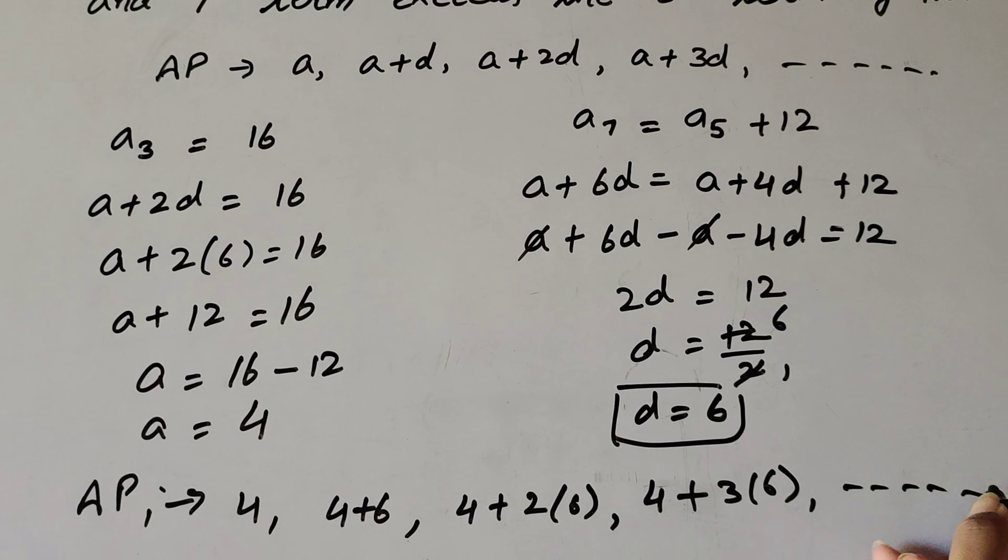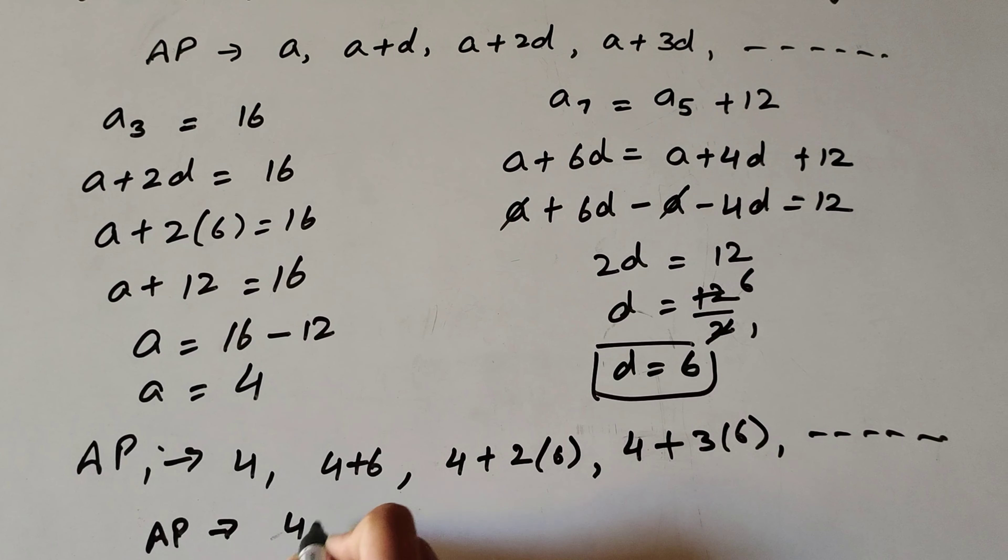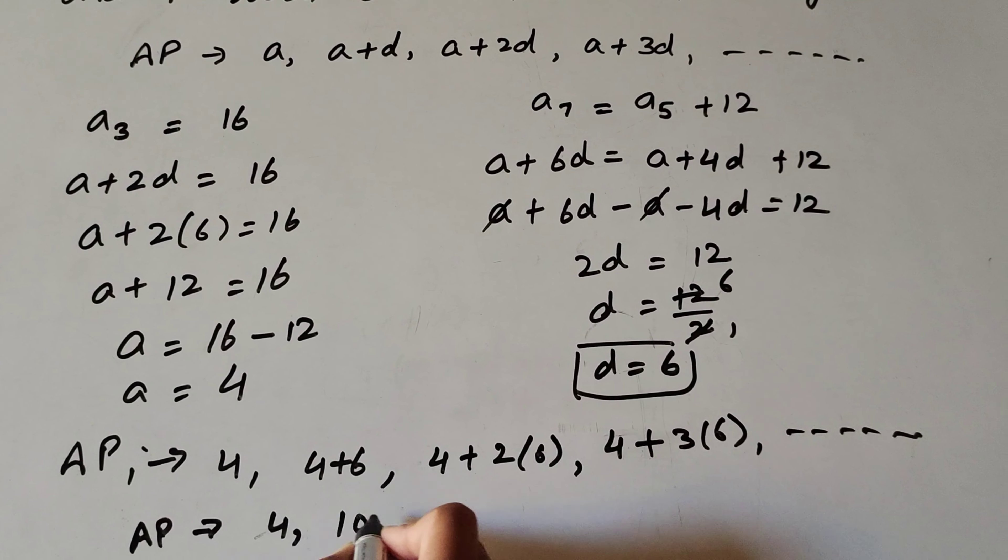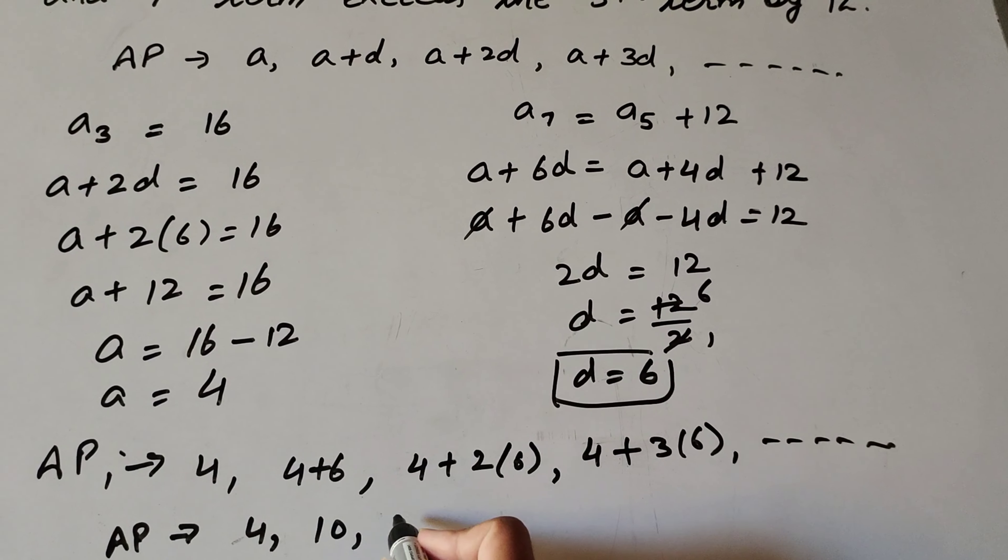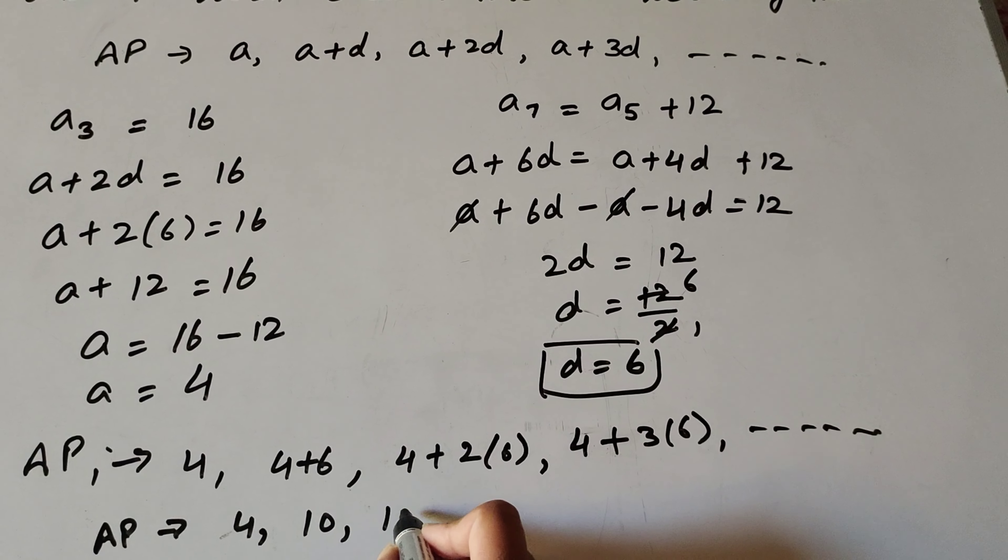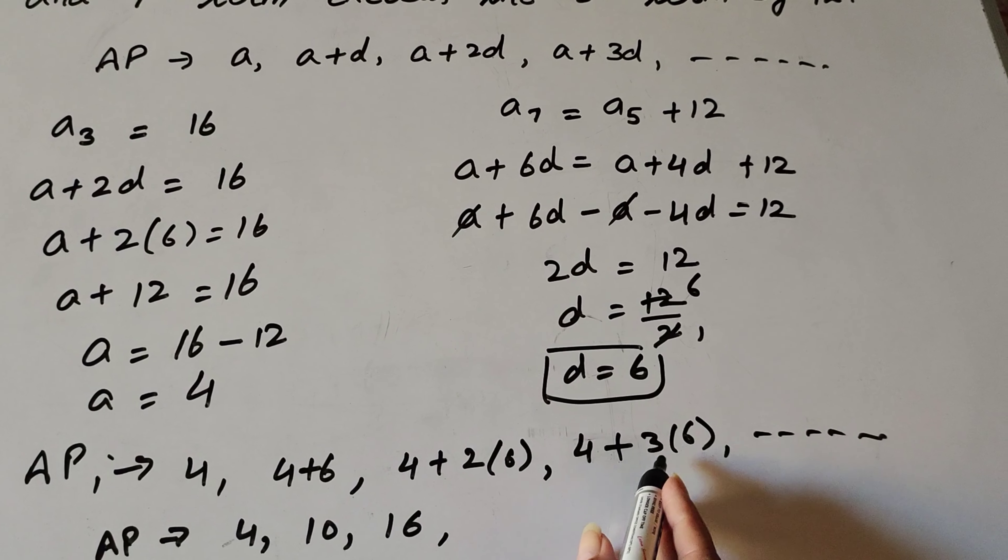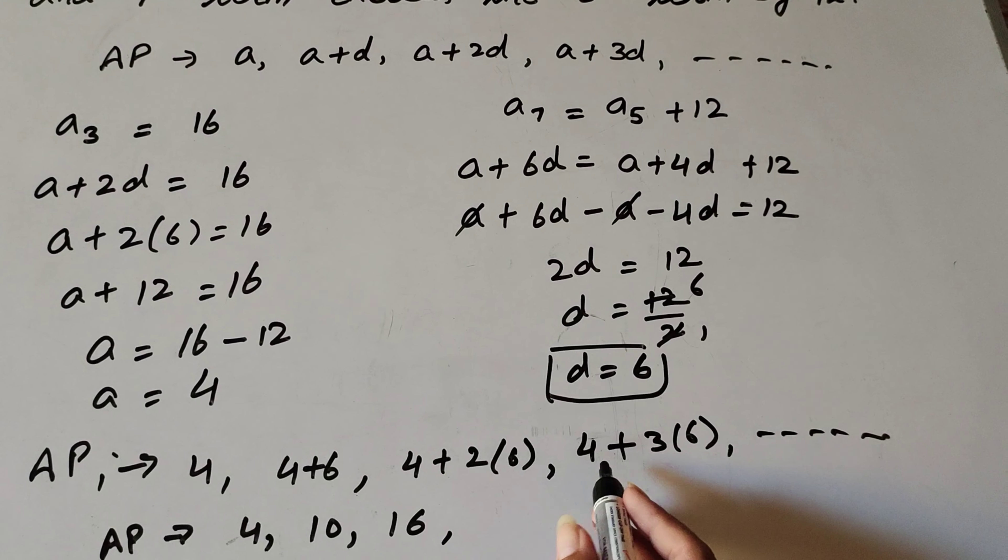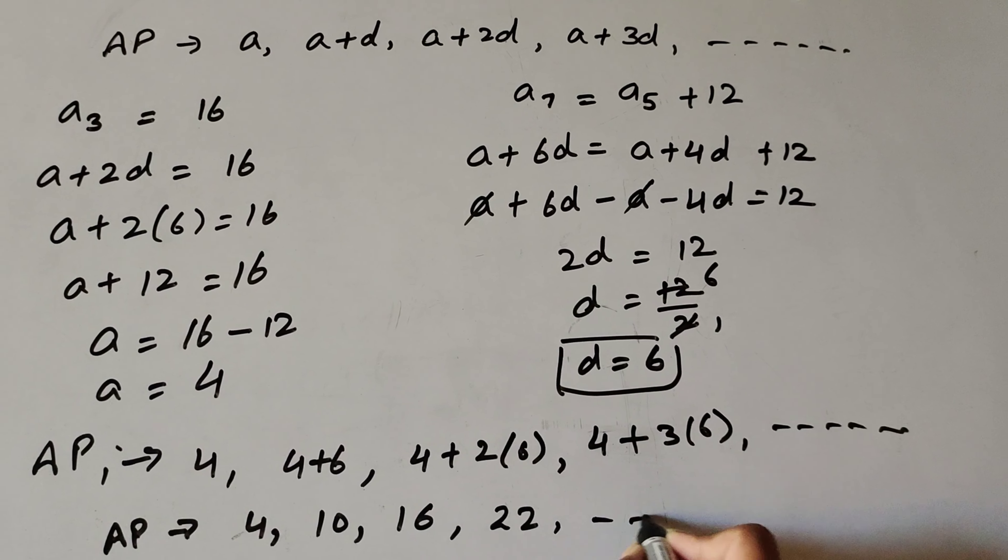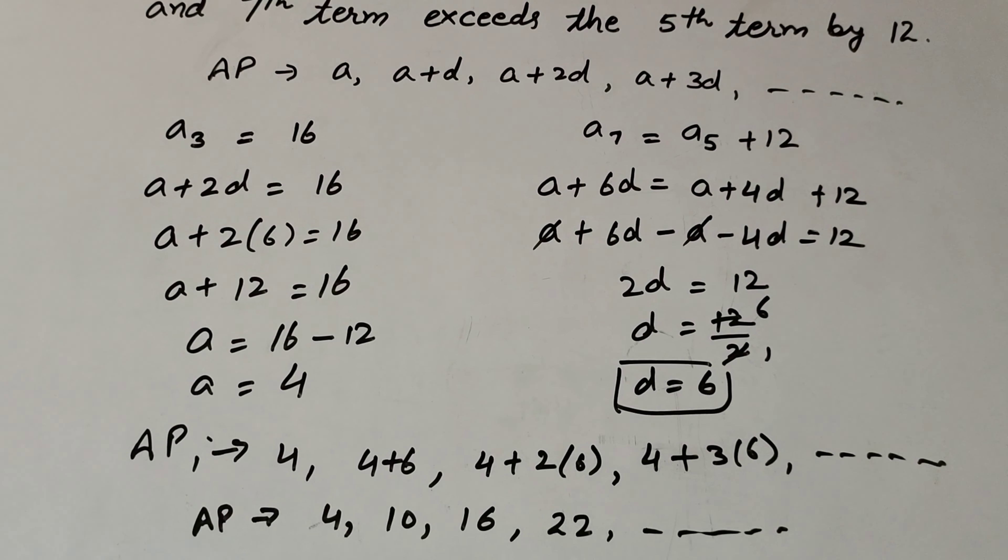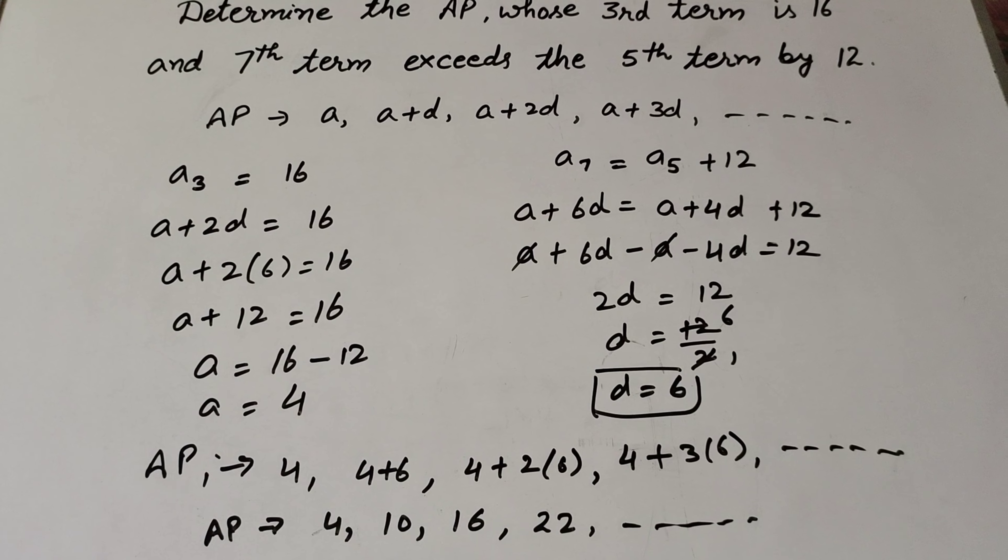So the AP is 4, 4 plus 6 is 10, 4 plus 12 is 16, 4 plus 18 is 22, and so on. Therefore the AP series is 4, 10, 16, 22, and so on.